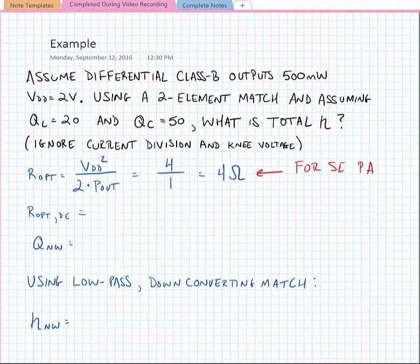We noted that we're designing a differential power amplifier. And the differential impedance is equal to 4 times the single-ended impedance. Or in other words, the differential impedance should be 16 ohms.